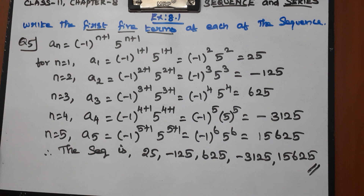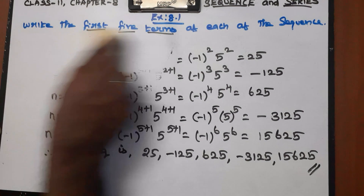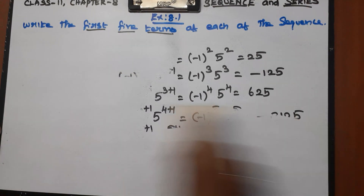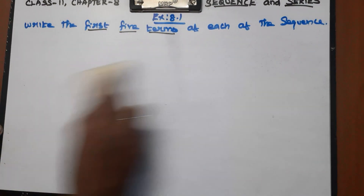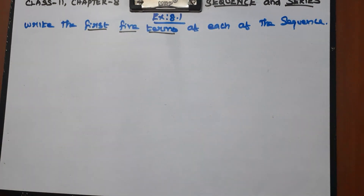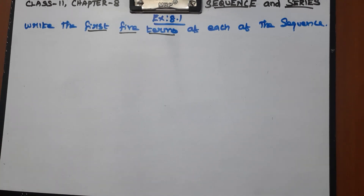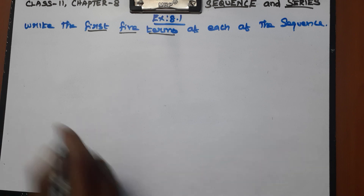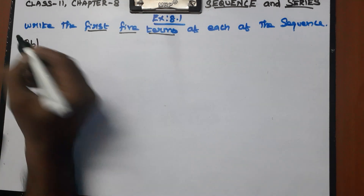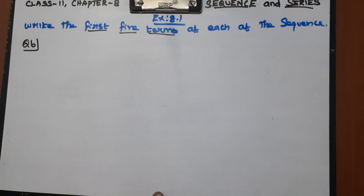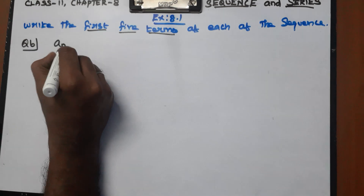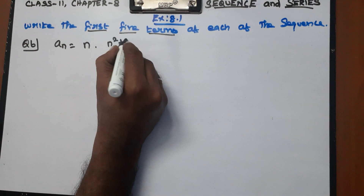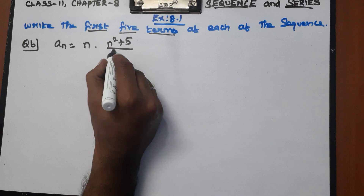Now question number 6. It's very easy. Let's take a look at this model. If you want to complete the introduction part, it's very useful. Question number 6: an equals n into (n squared plus 5) divided by 4. How do you find the first five terms?